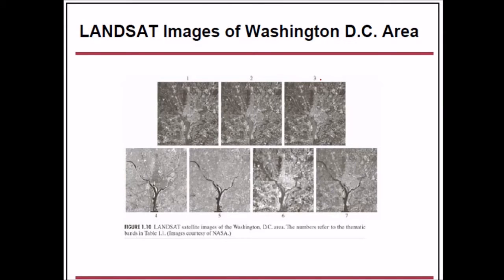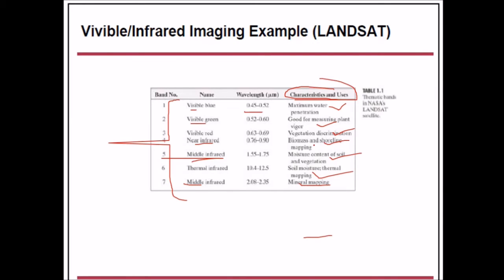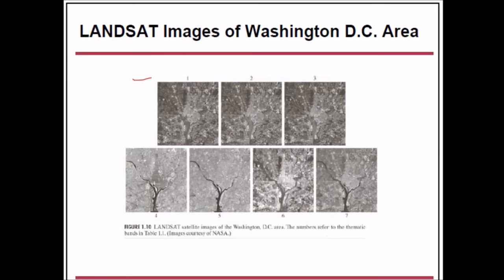These are the Landsat images of the Washington DC area — seven images in total. The numbers refer to the thematic bands we just discussed in the table.